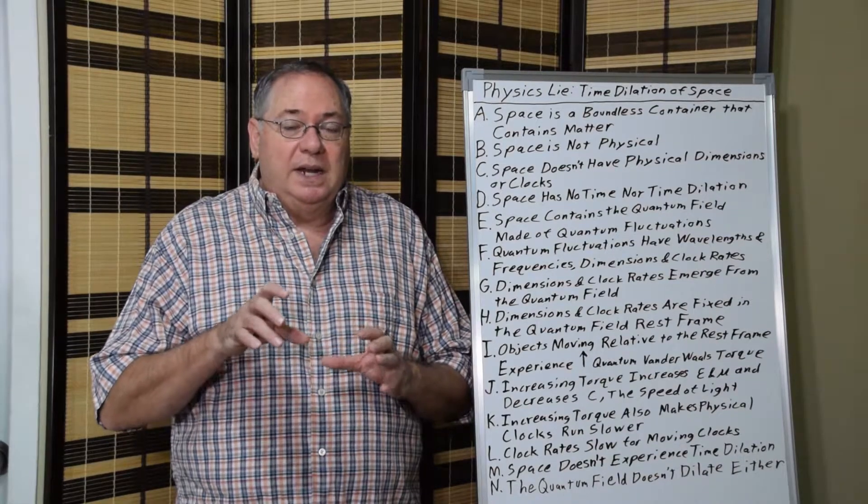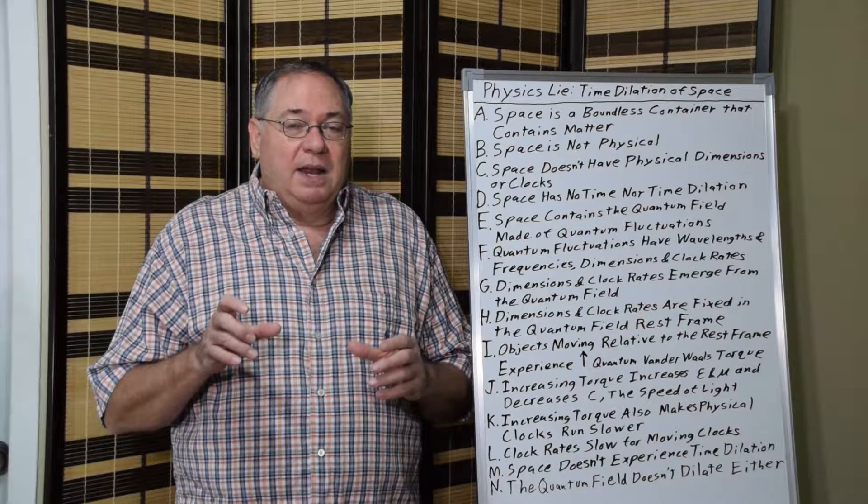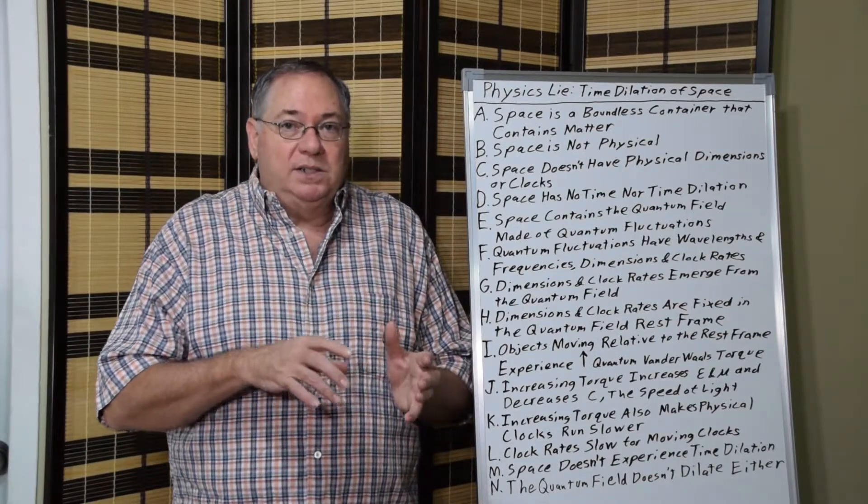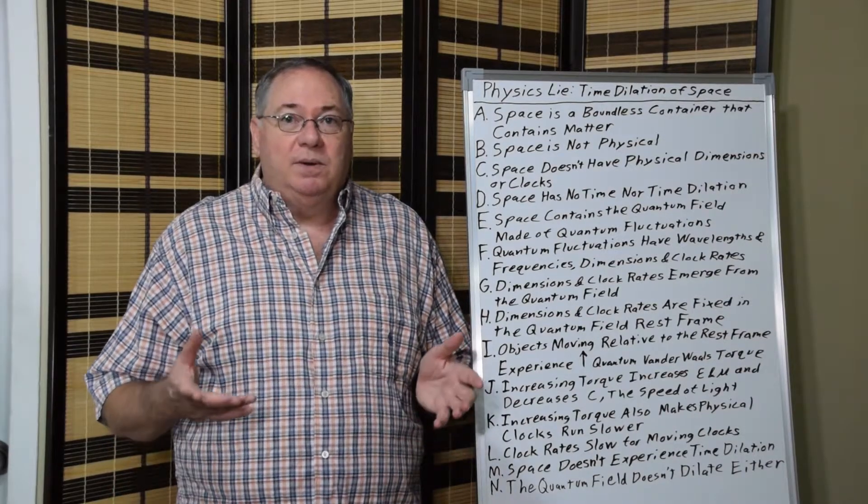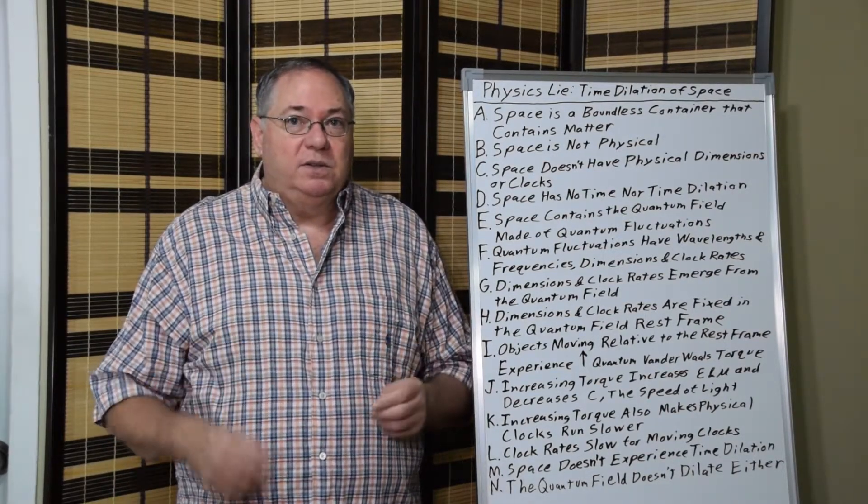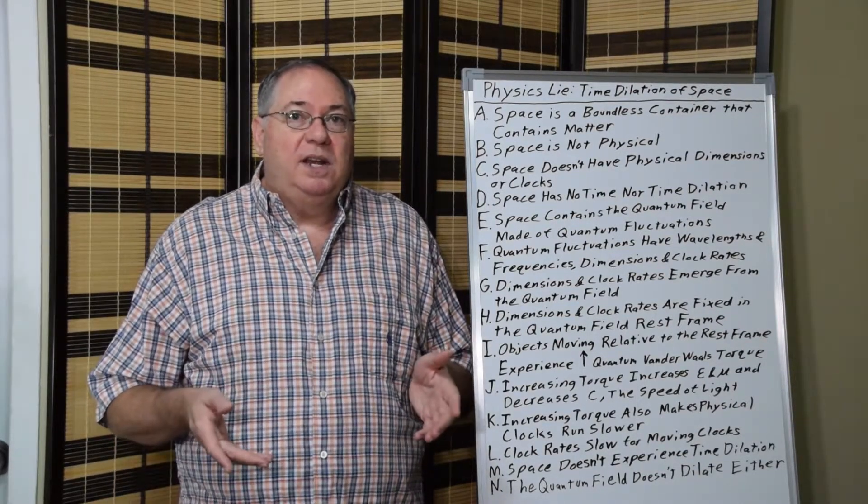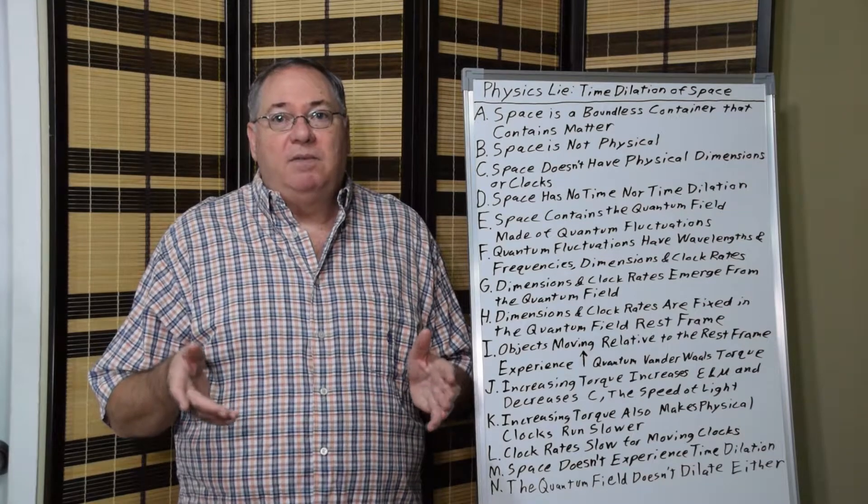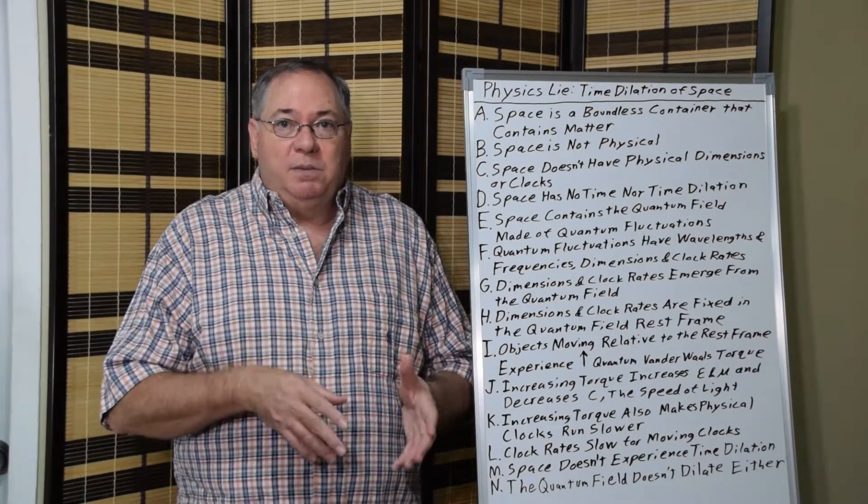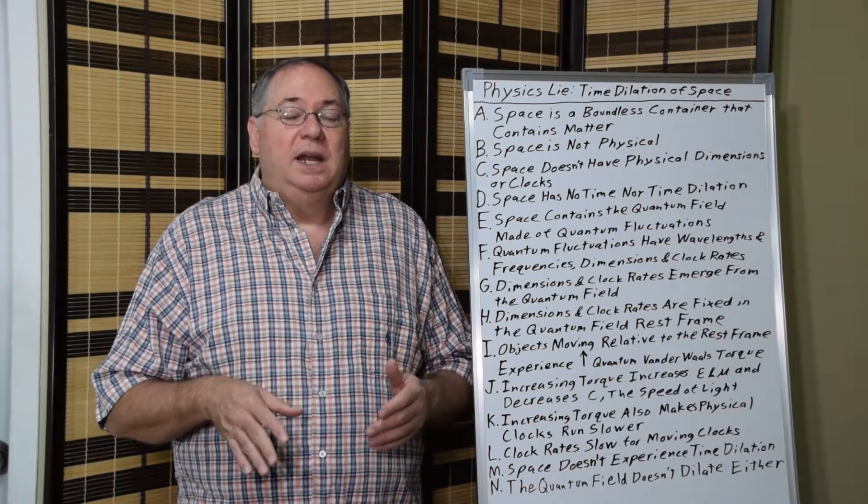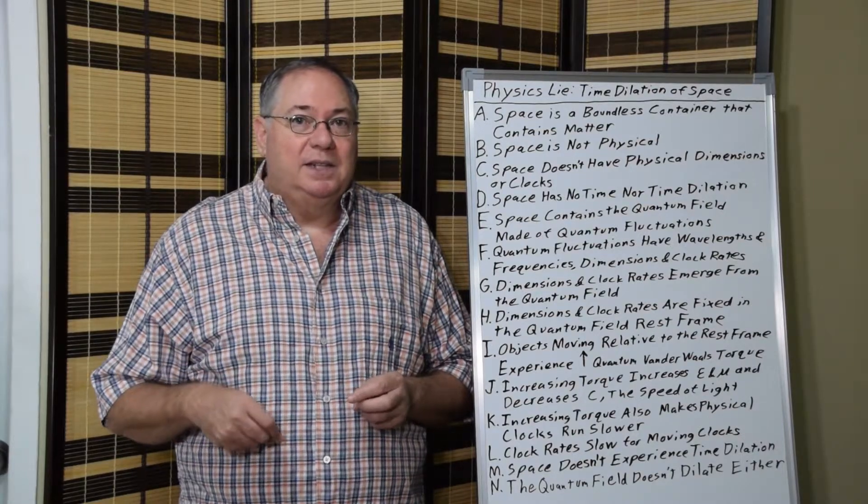It's this torque that regulates how fast space can be polarized and magnetized, which also determines the permittivity and permeability of space, the electric and magnetic constant, which determines the speed of light limit. The quantum Van der Waals torque is a self-regulating mechanism that regulates the dimensions and clock rates of the quantum field. And that's where the true clock rates, the true physical clock rates of the universe come from. And then the quantum field itself has a rest frame. It has a frame of reference where the permittivity and permeability are at their lowest and the speed of light is at its highest, as first recognized by Maxwell.